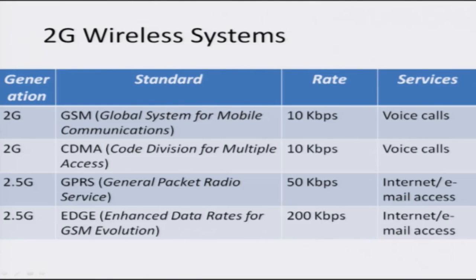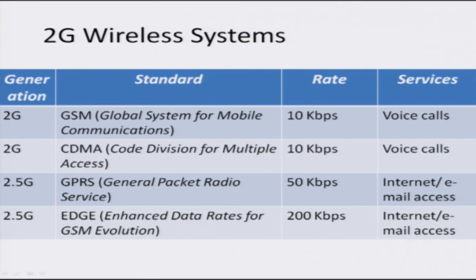Let's have a brief overview of the various generations of wireless communication standards. The modern revolution in cellular communications began with 2G, or the second generation. The most prominent standard of 2G is GSM, the Global System for Mobile Communication, and another standard is CDMA, which stands for Code Division Multiple Access. Both these 2G standards support about 10 kilobits per second, which is enough for basic voice telephone calls.